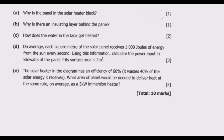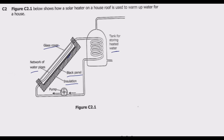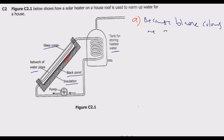Question (a): Why is the panel in the solar heater black? The reason is because black colors are good absorbers of heat. The heater absorbs solar energy and converts it into heat energy, which is used to heat the water.